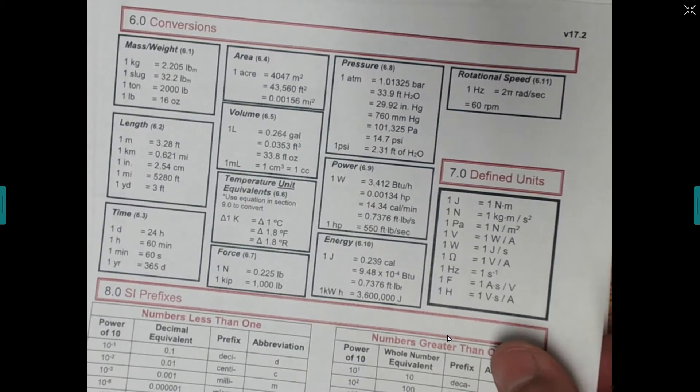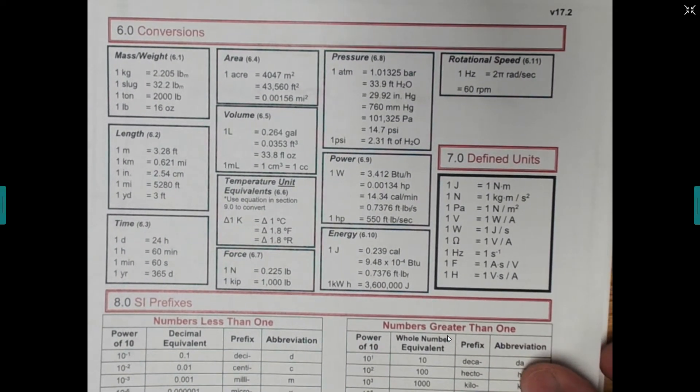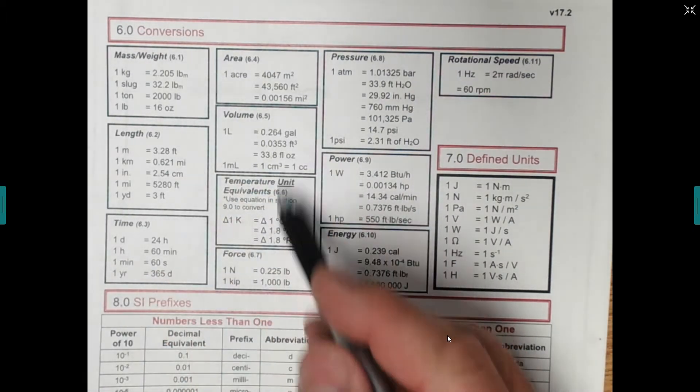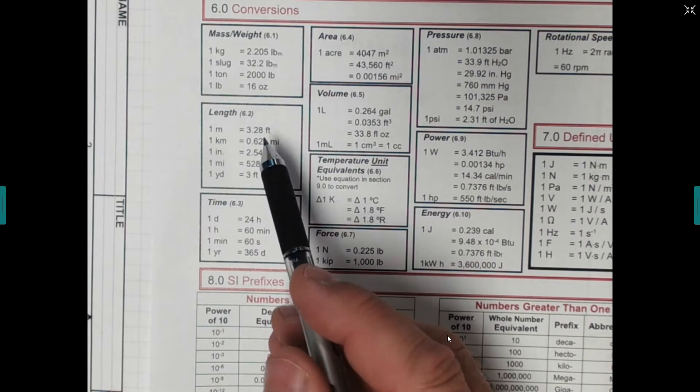You can get these kind of things from our formula sheet, or from the internet, or a lot of different places. You can see a bunch of different equalities that we might have. So if we're looking at length, one meter is 3.28 feet,